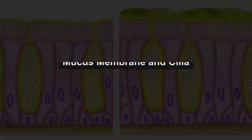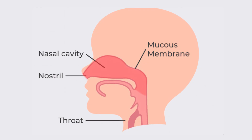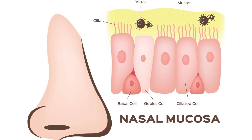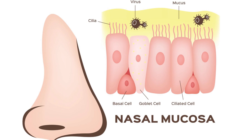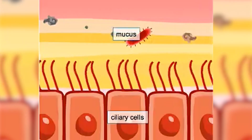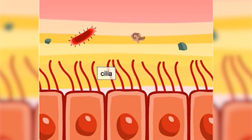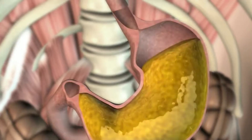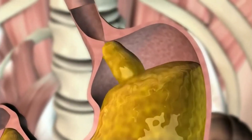The inner lining of the nose is covered with mucus membranes, which secrete mucus to keep the nasal cavity moist. This moisture is essential for trapping dust, bacteria, and other particles that could be harmful if they reach the lungs. Along with mucus, the nose also contains cilia — microscopic, hair-like structures that move in a wave-like motion — which push the mucus and trapped particles toward the back of the throat, where they can be swallowed and destroyed by stomach acid.